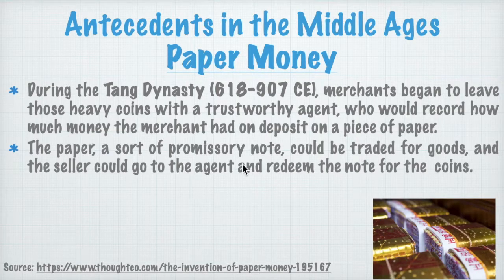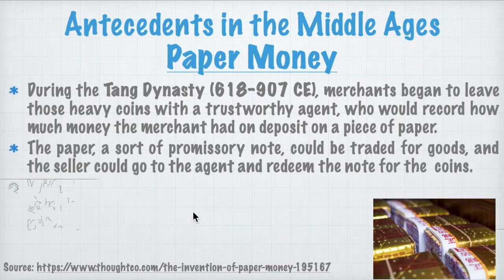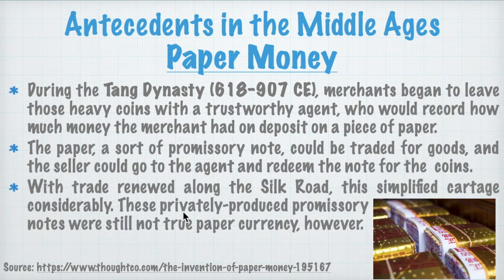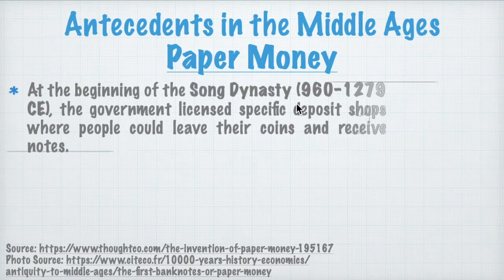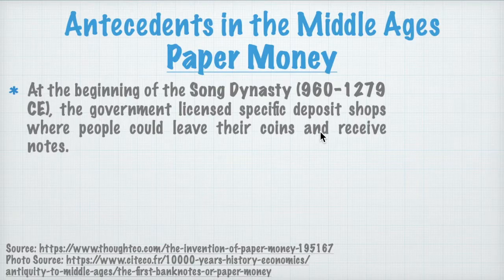This paper — think of it as a promissory note — could be traded for goods, and the seller could go to that agent to redeem the note for coins. With trade renewed along the Silk Road, this gave simplified cartage through privately produced promissory notes, though these were not yet true paper currency. At the beginning of the Song dynasty (960–1279 CE), the government licensed specific deposit shops where people could leave their coins and receive paper notes.